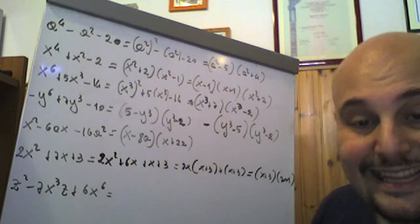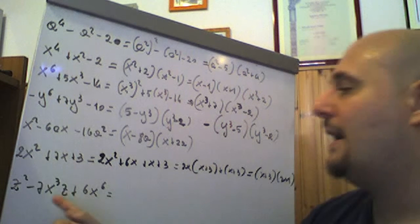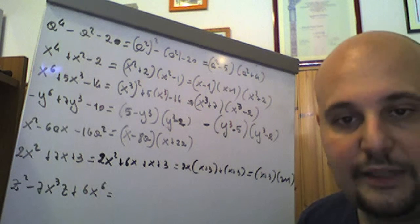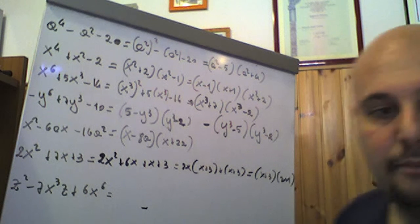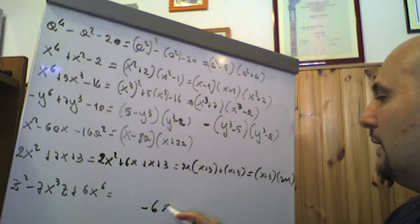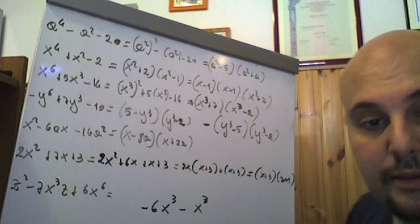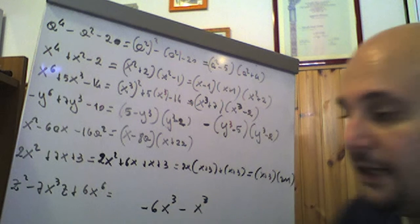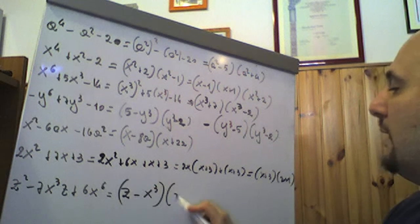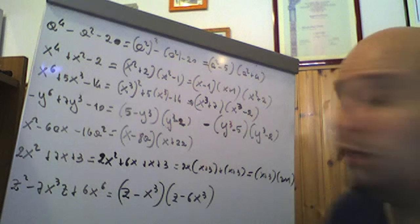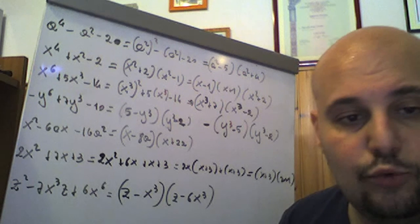Z² − 7x³z + 6x⁶ è un trinomio notevole nella variabile z, dove −7x³ è il coefficiente davanti a z e 6x⁶ è il termine noto. Dobbiamo trovare due termini che moltiplicati diano 6x⁶ e sommati diano −7x³: abbiamo −6x³ + (−x³) = −7x³ e −6x³ × (−x³) = 6x⁶. Quindi la scomposizione è (z − x³)(z − 6x³).